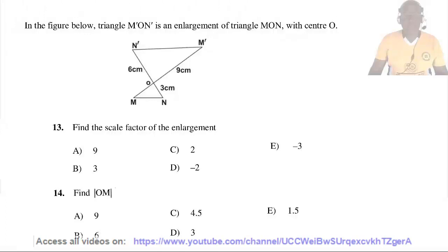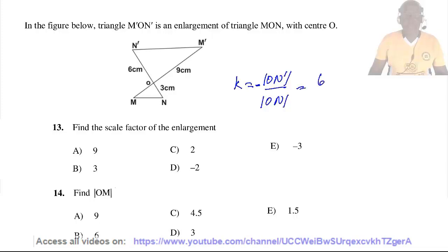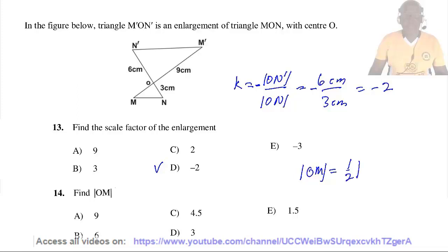For the enlargement in Questions 12–14: the enlargement is in the opposite direction, so the scale factor is negative. The scale factor equals 6 cm divided by 3 cm, giving negative 2. So the answer is D. Question 14: Find the magnitude of OM. Since the scale factor is −2, the magnitude of OM equals half the magnitude of OM', which is half of 9 = 4.5. So the answer is C.